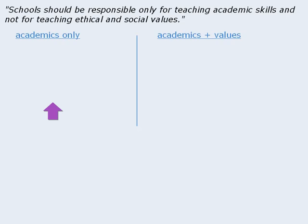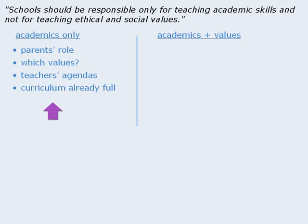What are some points for this side? Well, teaching values is something that many believe should be taught by the parents. Another point for teaching only academics is that it is not clear which values should be taught. There's also the problem of teachers having their own agendas when it comes to the values they might wish to force on their students. Plus, one could argue that schools already have enough to teach without adding to the curriculum.